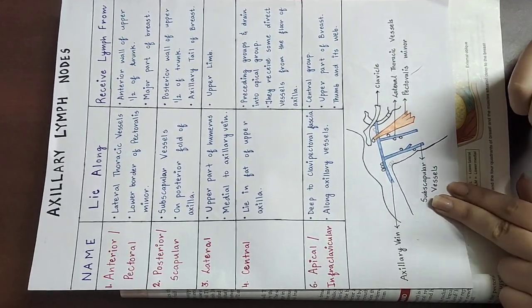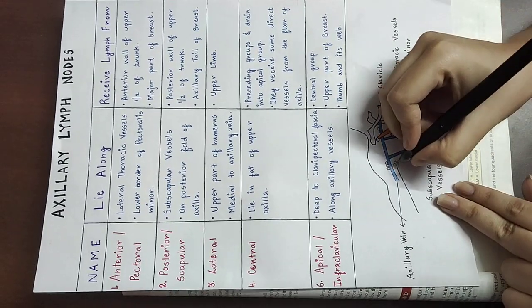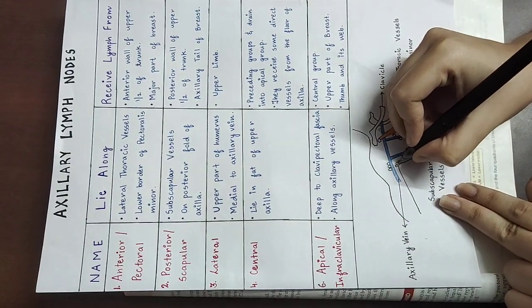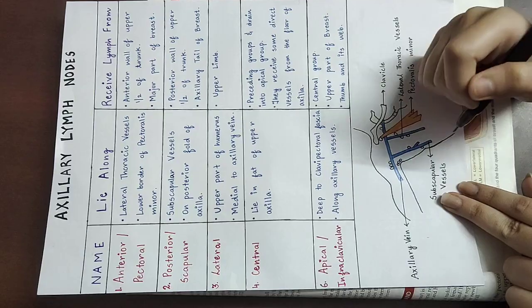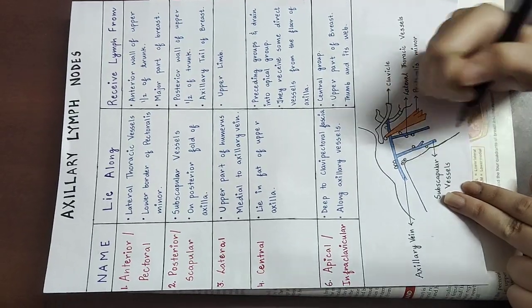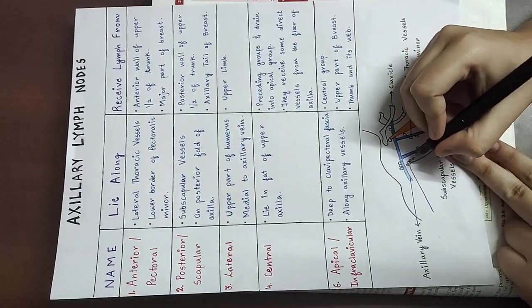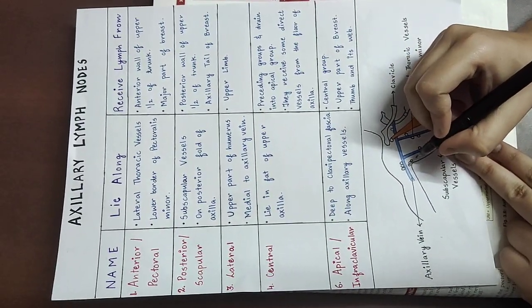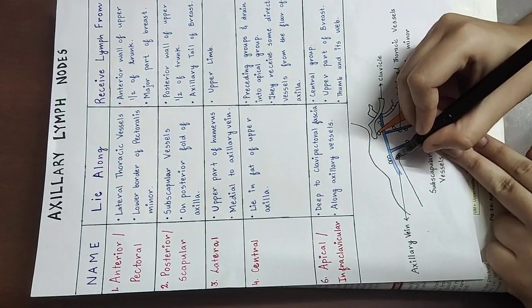The central group lies in the axillary fat of the upper axilla. They receive lymph from the preceding groups and drain into the apical group.